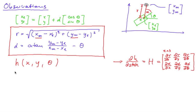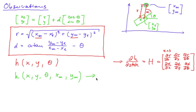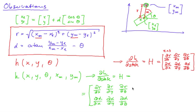But now we have a different situation: our landmarks become unknown as well. So our function h changes, and it's now a function of x, y, and theta, as well as the landmark's x-coordinate and y-coordinate. It is important to understand that we do not modify our observation equation at all. The only difference is that previously we thought of xm and ym as being constants, and now we think of them as being variables which are part of our state. So we have to augment our Jacobian matrix by the derivatives with respect to xm and ym.